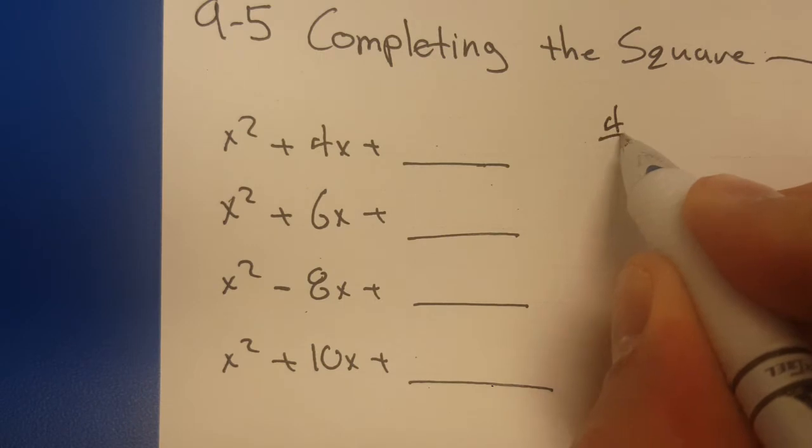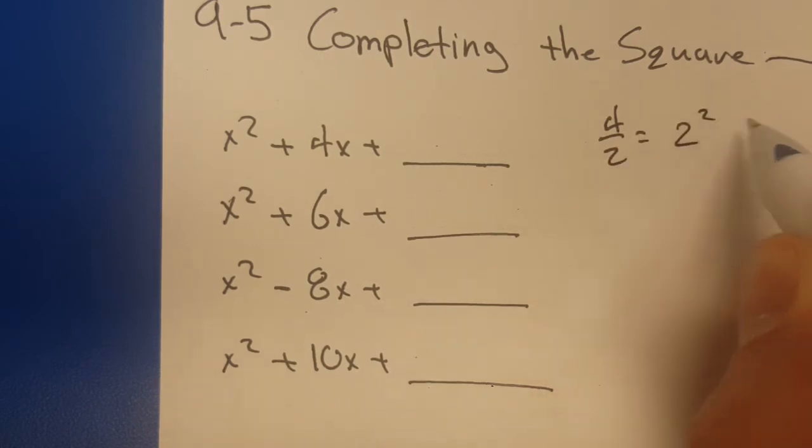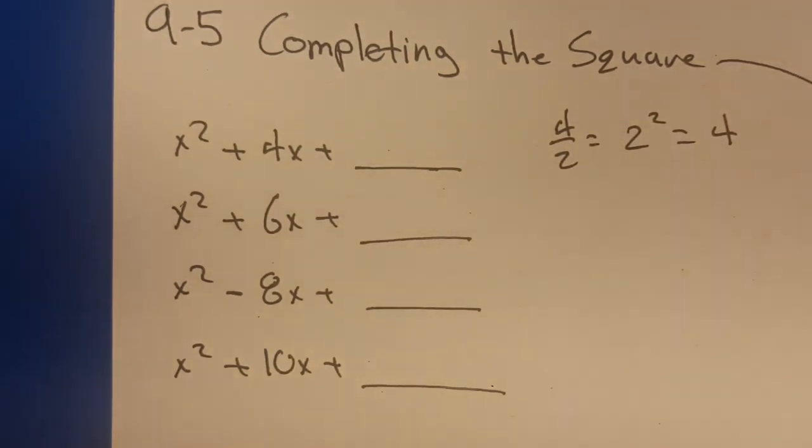So 4 divided by 2 is 2, square it, well, it turns right back into 4. That's kind of a weird one. Square completed.